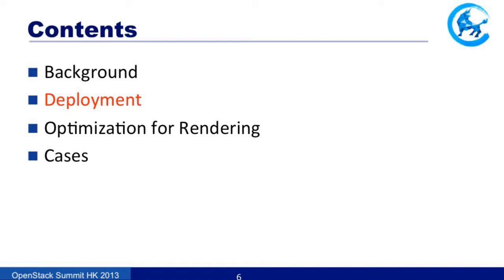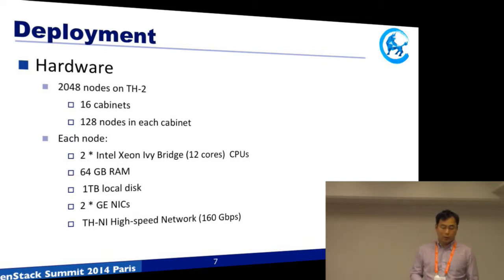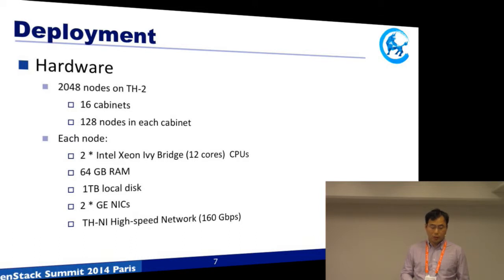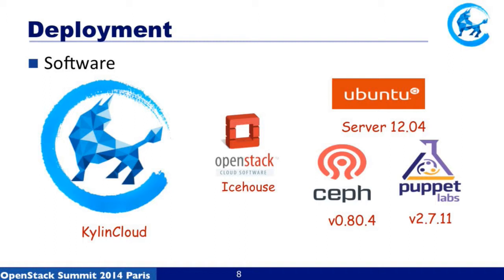How can we deploy our platform? We deployed our cloud on two thousand compute nodes, and each component has 128 nodes. Each node has two Intel Xeon CPUs and 64 GB memory. Our cloud is based on OpenStack as the host version, with the host OS being Ubuntu Server LTS. We use Ceph as the backend storage and deploy OpenStack components with Puppet.